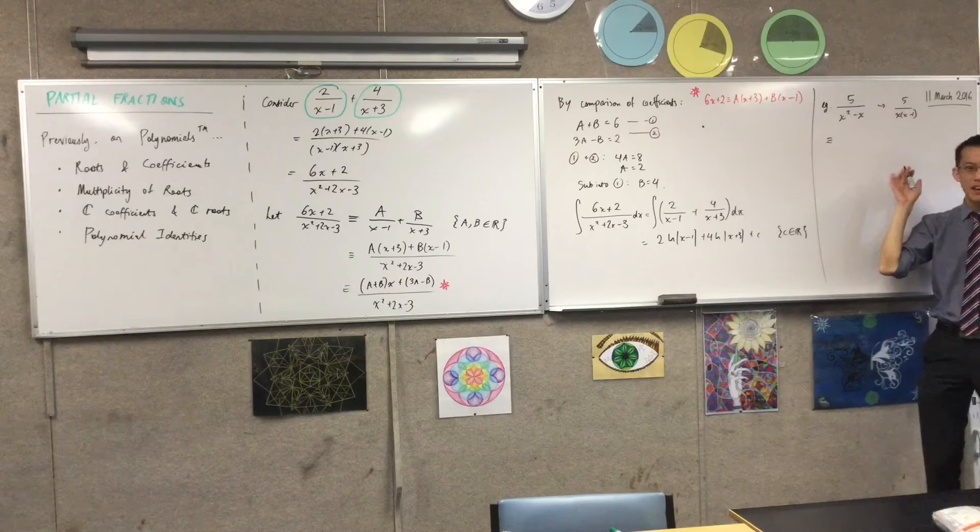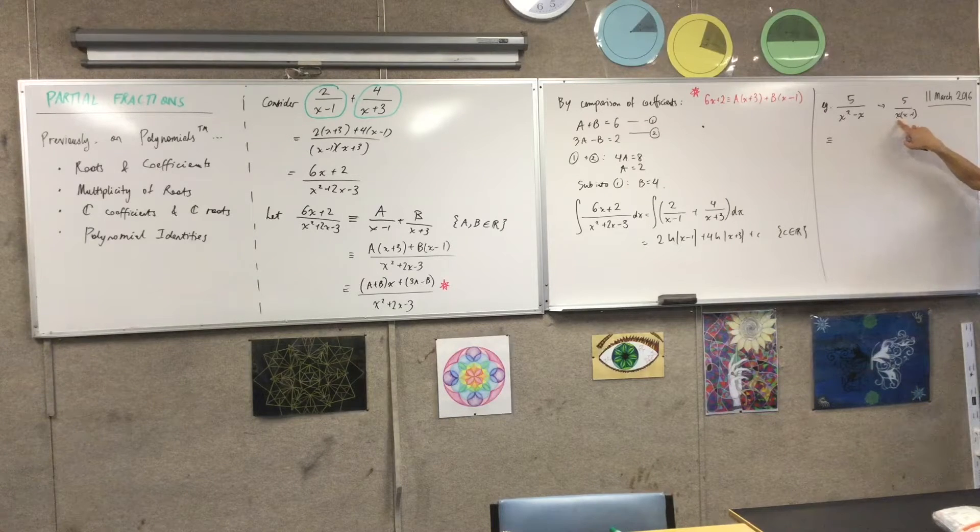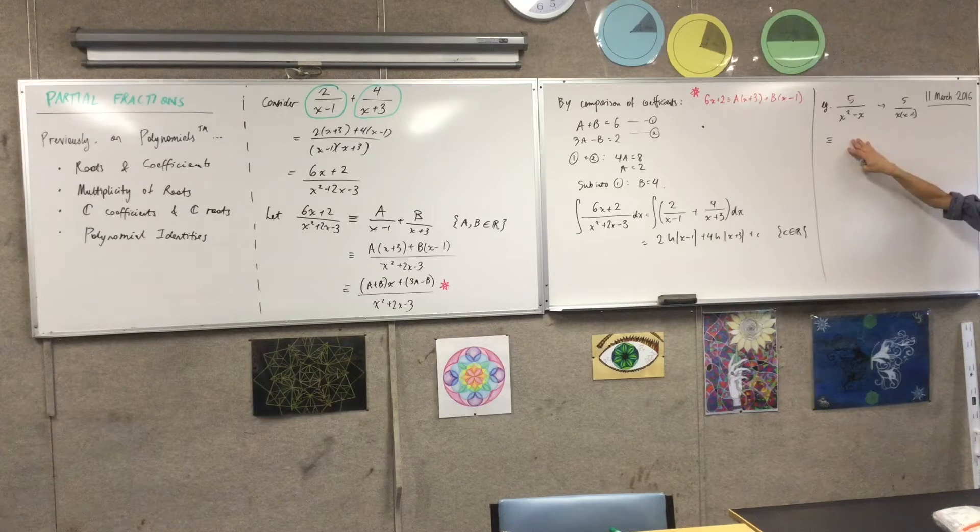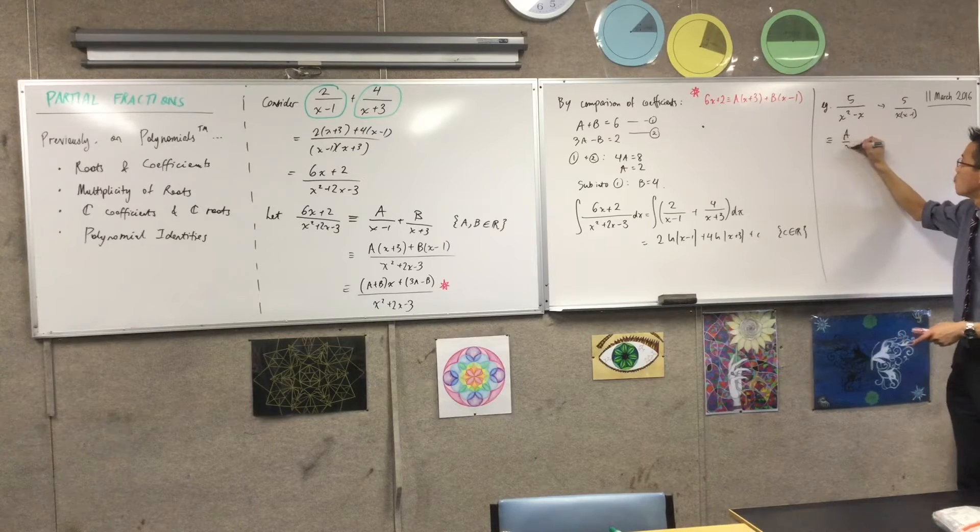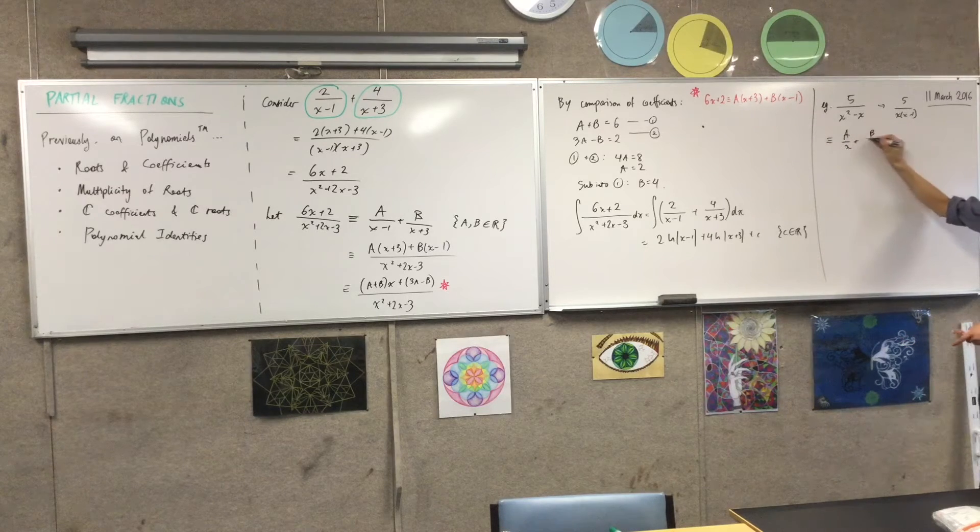I think we're confident that you can mentally do that. All you really need is that pair of factors, right? So now what identity would I introduce on the basis of that? A on x. Yeah? Plus A on x minus 1. Fantastic.